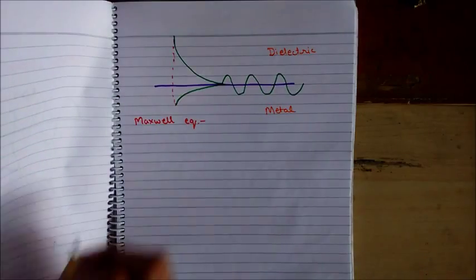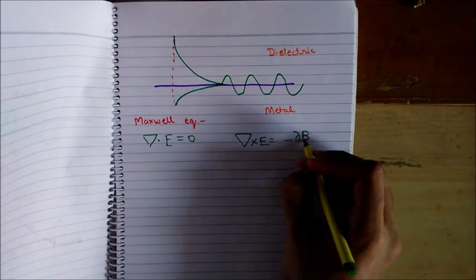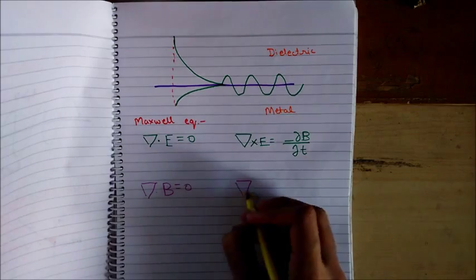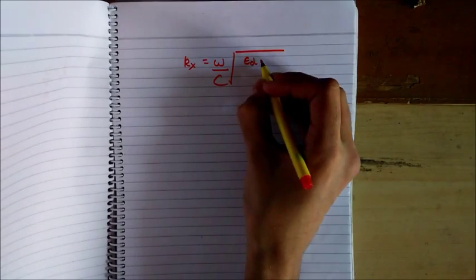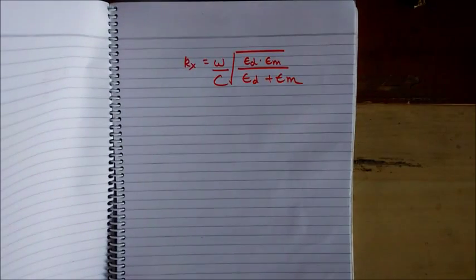By solving the Maxwell's equation, we find the longitudinal oscillations are quantized which is equal to omega by c under root of epsilon of dielectric multiplied by epsilon of metal upon epsilon of dielectric plus epsilon of metal.